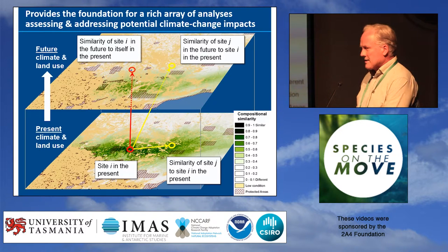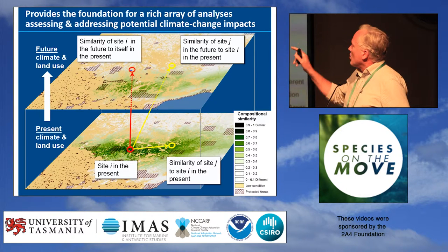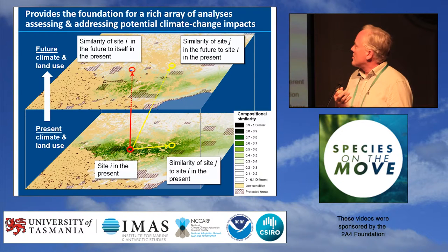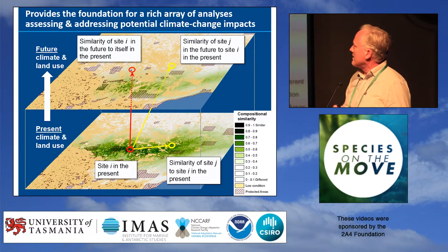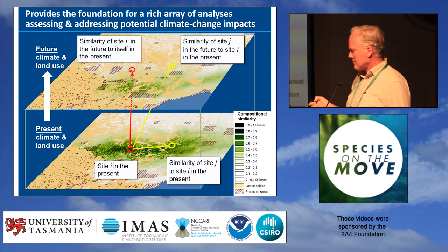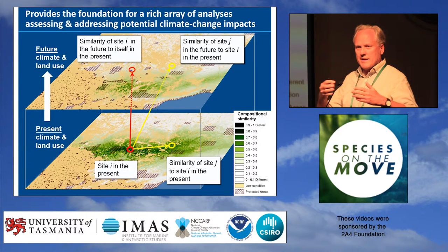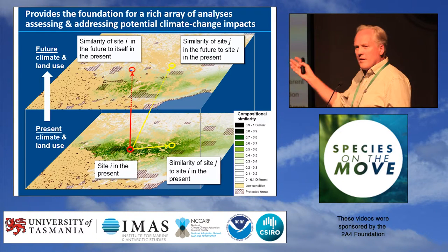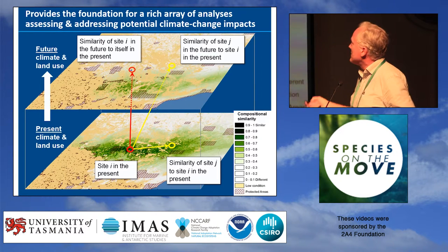So what does this allow? Basically, it puts us in a position where we can not only look at future projections of climate change and interpret what they will mean in terms of the change in composition for a site of interest, but we can also do that by looking at the site of interest now relative to another site in the future. So the shades of green in this diagram represent varying levels of predicted compositional similarity — or bioclimatically scaled climatic difference — between those locations.